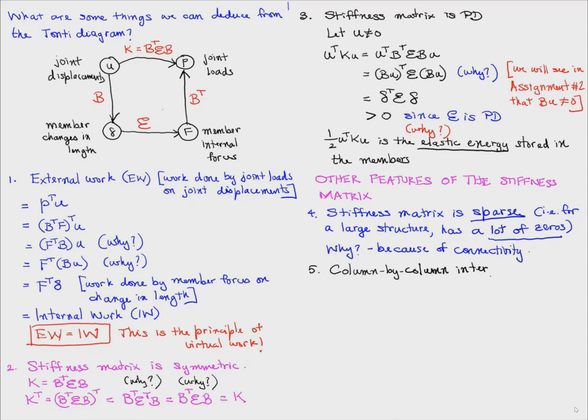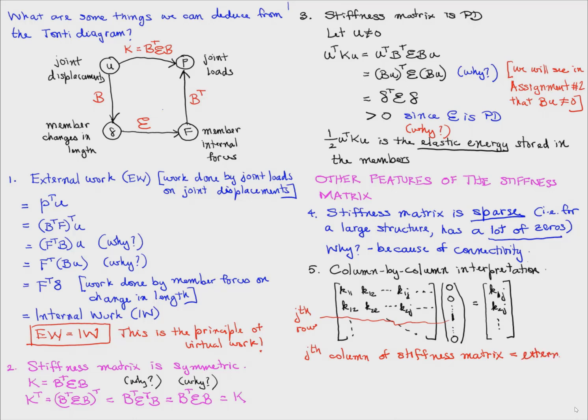The last feature of the stiffness matrix we talk about is a column-by-column interpretation. Let's take the stiffness matrix and multiply it by a vector that is all zeros except one in the jth spot. If we multiply this vector by the stiffness matrix, basically it pulls out the jth column of the stiffness matrix. So what this says is that the jth column of the stiffness matrix equals the external forces needed to produce a unit displacement in degree of freedom j, while keeping all other displacements zero, because that is exactly what the vector represents.